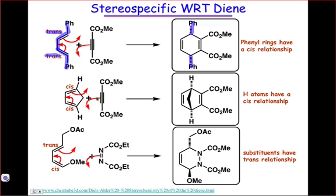Similarly, if both double bonds are cis, we see again a cis relationship between the substituents — the hydrogens here. On the other hand, if the double bonds have different stereochemical descriptors, as in this case where we have a trans and a cis double bond in the diene, then the substituents will end up trans to one another in the product.